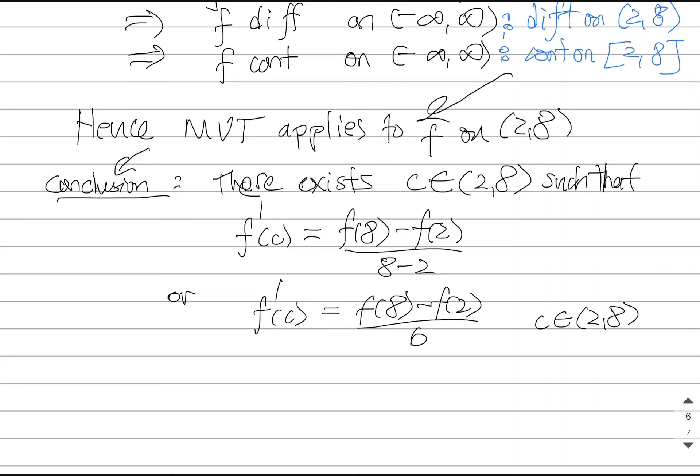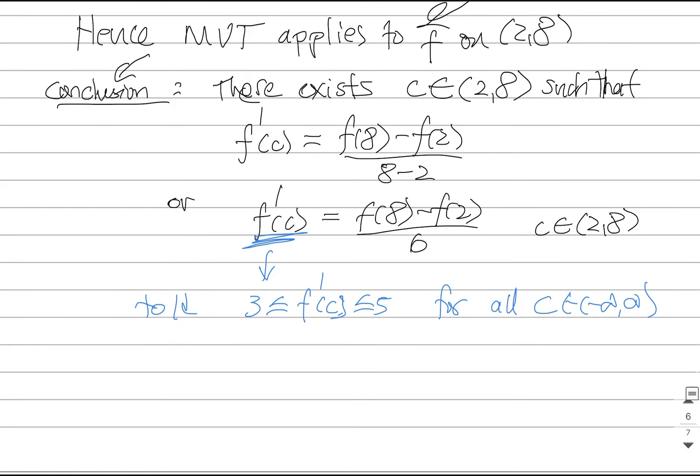So how is this going to help me? I have been told that the derivative, whatever value of the derivative you have, it always has to be trapped between 3 and 5 for every value of C between negative infinity and positive infinity. Now, the connection that you should make is that if f prime of C is equal to this stuff, that means this stuff has to satisfy the same condition. In other words, f(8) minus f(2) over 6 has to be between 3 and 5.